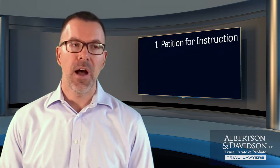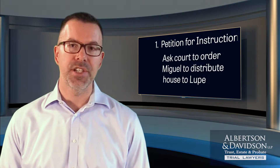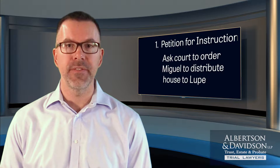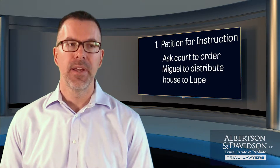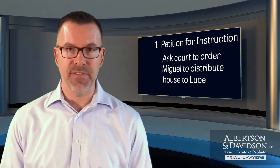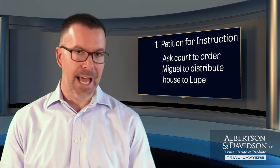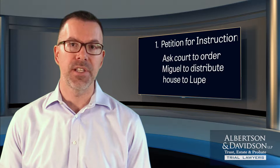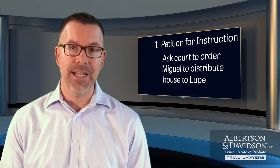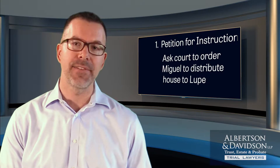Let's look at our options. Option one is to file a petition for instructions, asking the court to order Miguel to distribute the house or $250,000 to Lupe. This is a good option for Lupe — she has nothing to lose as a trust beneficiary. She can come forward and say she'd like to get the house. We've attached an appraisal to the petition for instructions, offering a little above fair market value, requesting an in-kind distribution. The only reason Miguel isn't making this distribution is because he wants the trust asset for himself.